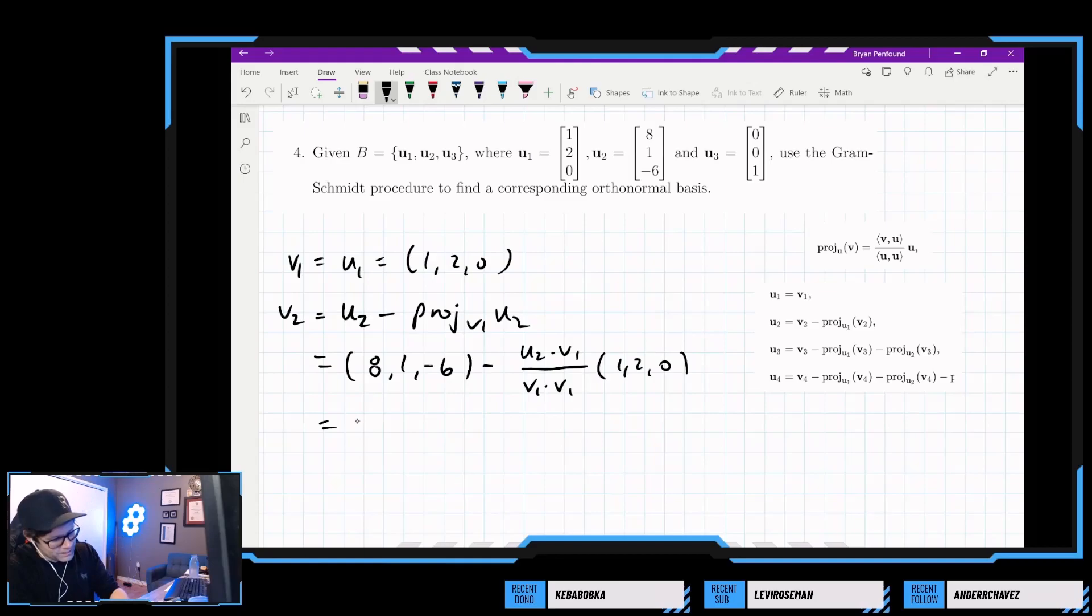So let me take 8, 1, negative 6, and the dot product of v1 and u2. So 8 plus 2 plus 0 over v1 dot v1, which is 1 plus 4.